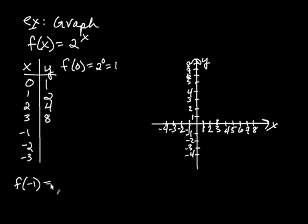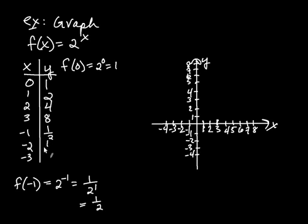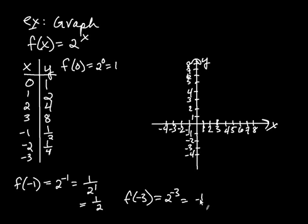f(−1) is 2 to the negative first, and that can always be written as 1 over 2 to the positive first — you write it in the denominator and the exponent changes sign. So 1 over 2 to the first is just 1 half. When you plug in negative 1, out comes 1 half. Likewise, plugging in negative 2 gives 1 fourth. And plugging in negative 3: f(−3) = 2 to the negative third = 1 over 2 cubed = 1 eighth.